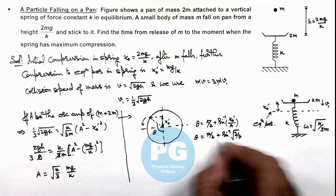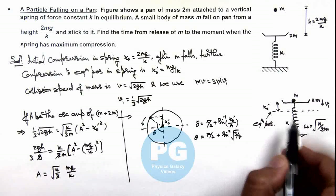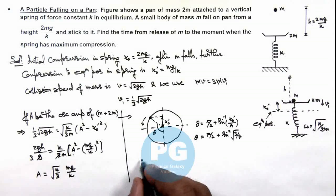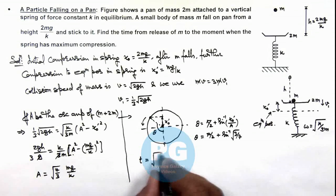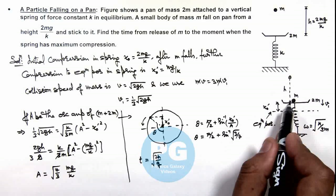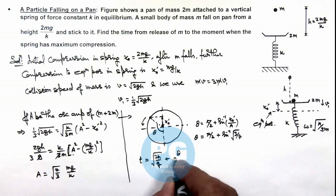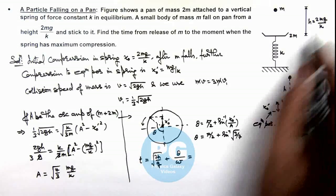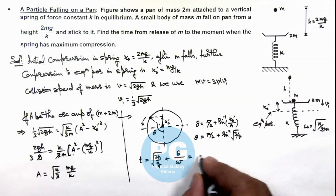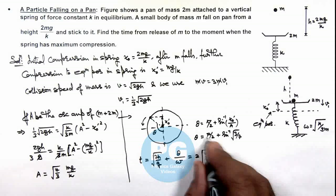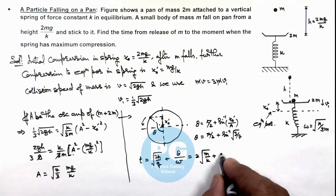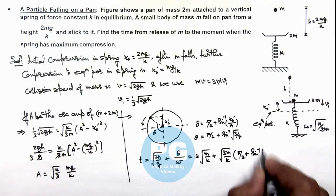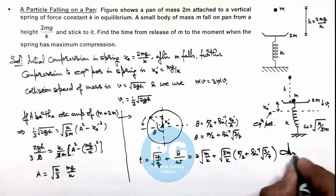This is the phase change in going from the collision position to the bottom extreme position. The total time is calculated as the time for mass m to fall a distance h under gravity, which is √(2h/g), plus θ/ω where ω is the angular frequency of oscillation. Substituting h = 2mg/k and ω = √(k/3m), the total time is: 2√(m/k) + √(3m/k)·(π/2 + sin⁻¹(√(3/7))). This is the final result — the total time from the fall of m to when the combined system reaches its bottom extreme point.